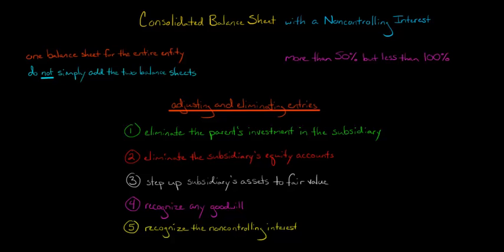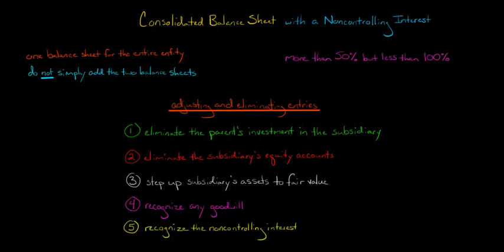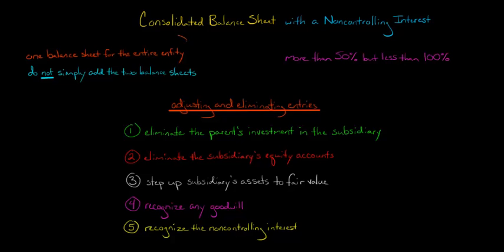In this video, we're going to talk about how to put together a consolidated balance sheet when you have a non-controlling interest. So if you acquire more than 50% of a corporation but less than 100%, you're going to be required to consolidate that subsidiary. You're going to account for it as if the purchaser and the target corporation are one entire entity all together.